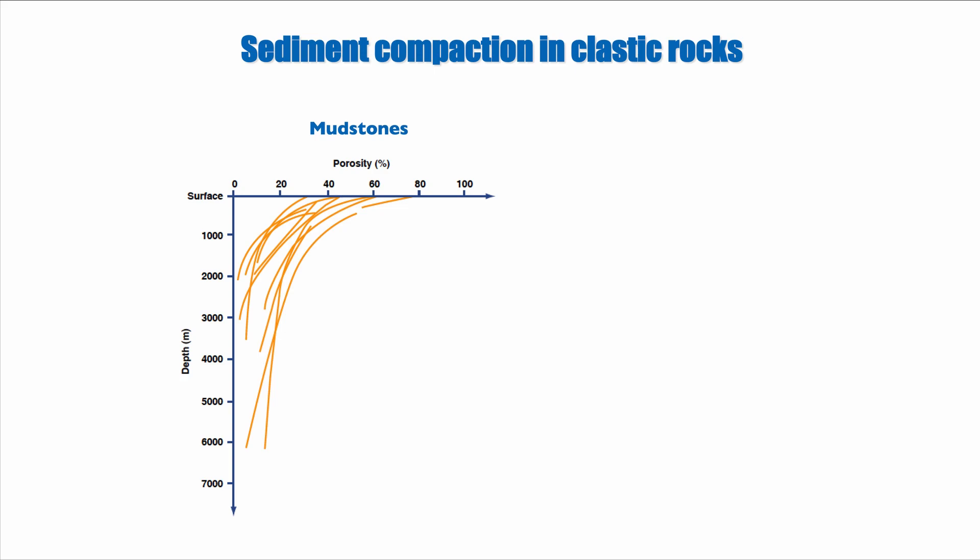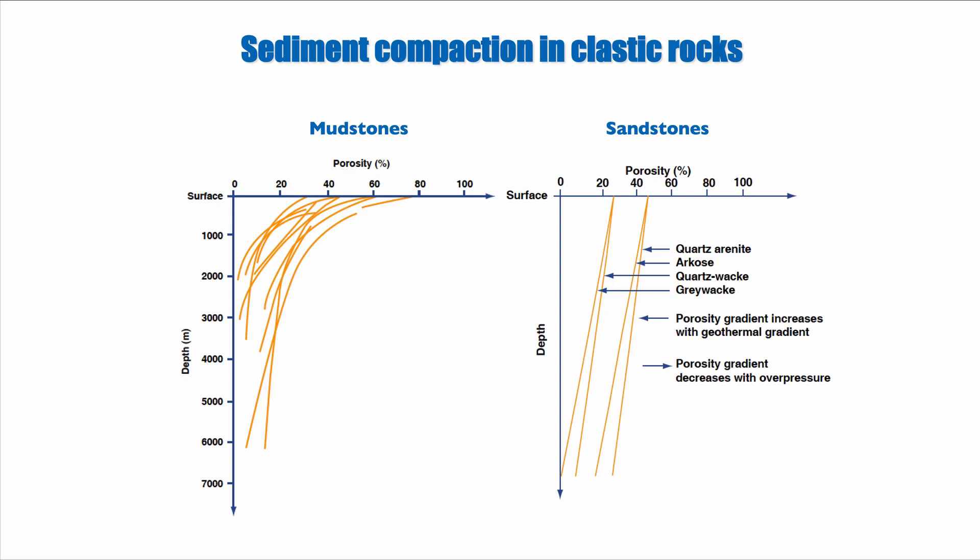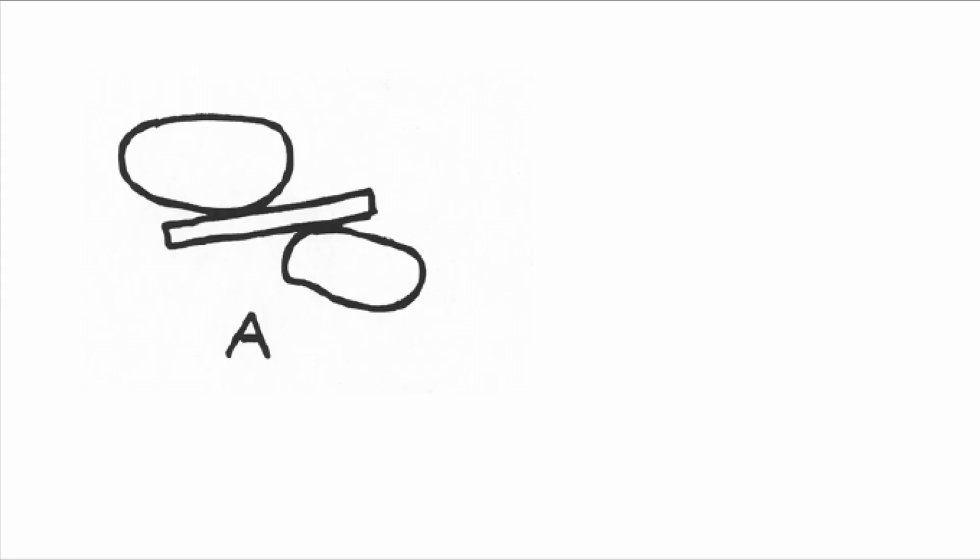If you look at coarser sediments, for instance sandstone, we also have the same general decay of porosity with depth, but it's a much straighter curve. We don't have that very rapid decrease in porosity at the surface followed by a more gentle decrease. That's because sandstone and mudstone have different properties and they dewater at different rates and don't have the same potential for compaction.